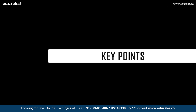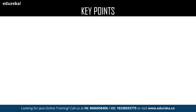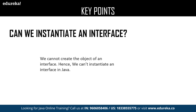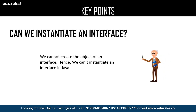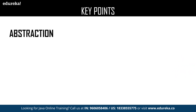Let us discuss the key points about Java interfaces. The first one is: can we instantiate an interface? We cannot create an object of an interface, hence we cannot provide instances in an interface. The next key point is abstraction.